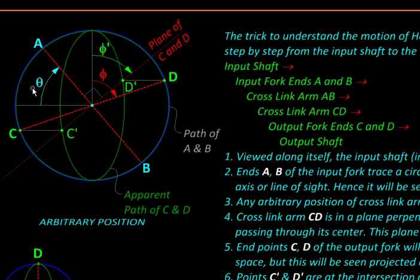One can see that the angles turned by the input and output shafts are not equal. So in general, this joint will have a varying velocity ratio. The input shaft will turn uniformly, but the output shaft will not.